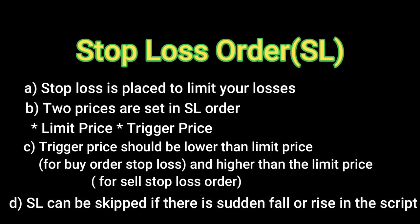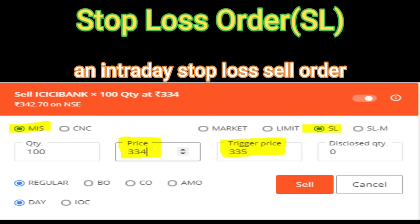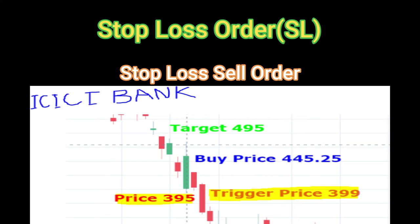How does it look in the Kite application of Zerodha? MIS stop-loss: trigger price and price. ICICI Bank is trading at 342.70 — the price (limit) is 334, trigger price is 335. The moment it comes down to 335, a limit order of 334 will be placed. If there is a steep fall and it drops directly to 330, the stop-loss order will be skipped. For example on a graph: I bought ICICI Bank at 445, target is 495, stop-loss is 395, but the trigger price is 399. The moment it comes down to 399, a limit order of 395 will be placed.